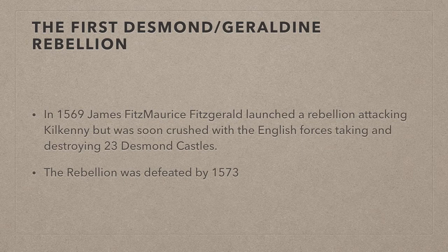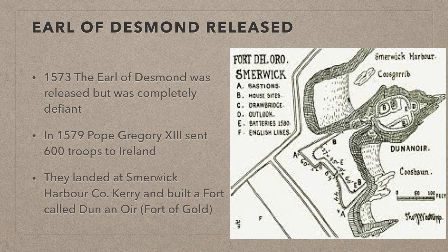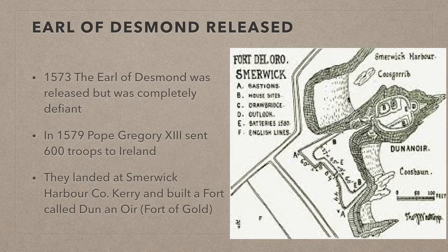The Fitzgeralds were crushed within a few weeks, with English forces taking 23 of Desmond's castles and slaughtering everyone inside them. The rebellion lingered on for a few years but was eventually ended in 1573. That same year the Earl of Desmond himself was released from imprisonment, but again he remained completely defiant. The Fitzgeralds of Desmond sent representatives to Europe to find help to fight the Protestant Queen of England, and in 1579 Pope Gregory XIII sent 600 troops who landed at Smerwick Harbour in County Kerry and built a fort there known as Dún an Óir, or the Fort of Gold. The Pope wanted to ensure that Ireland remained Catholic.